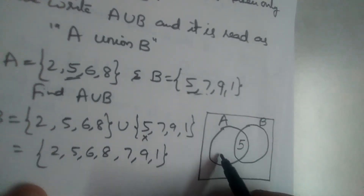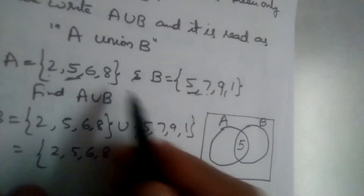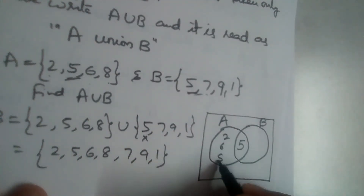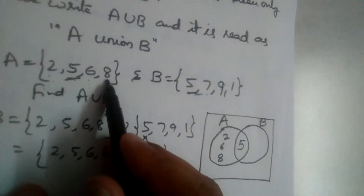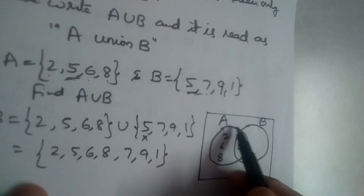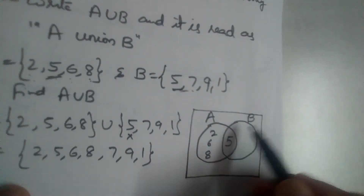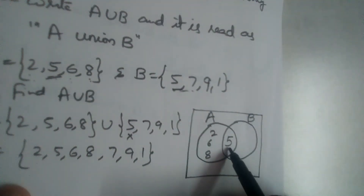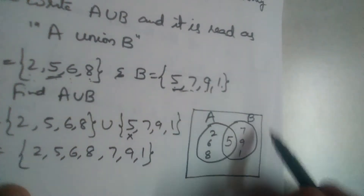In the part only belonging to A, we write the remaining elements: 2, 6, 8. So set A contains 2, 5, 6, 8 — correct. For set B, five is already in the intersection, so we write 7, 9, and 1 in B's exclusive region. Set B contains 5, 7, 9, 1.